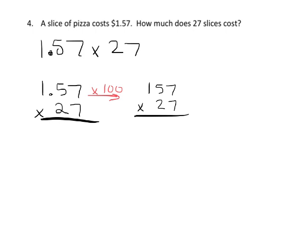So that gives us 157 times 27. And now we're free to multiply. So 7 times 7 is 49, carry the 4. 7 times 5 is 35 plus 4 is 39, carry the 3. 7 times 1 plus 3 is 10. We're going to put a 0 here because this 2 is not really a 2, it's a 20. So 2 times 7 is 14, so we're going to carry the 1. And then 2 times 5 is 10 plus 1 is 11, so we're going to carry the 1.